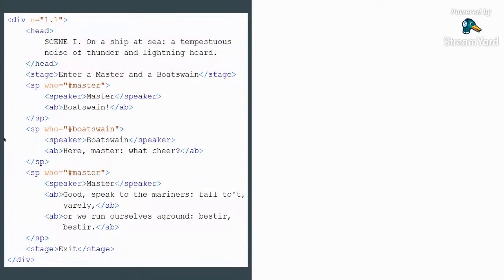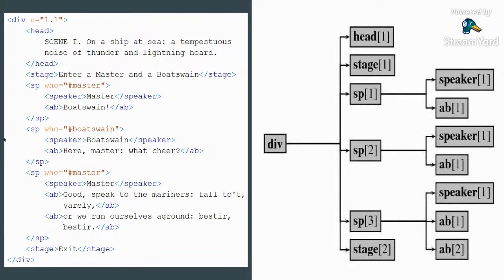Here again I have the same example rendered in TEI, and also rendered on the right-hand side as a tree. This illustrates why processing an ordered hierarchical content object is so effective — each of these nodes contains other nodes, and that allows for very swift and efficient processing of the data.